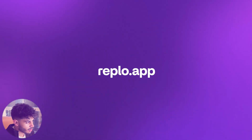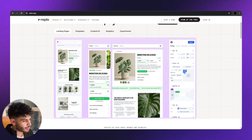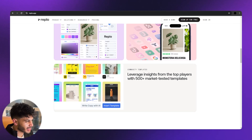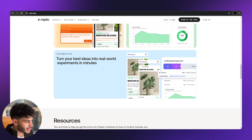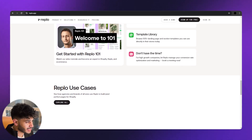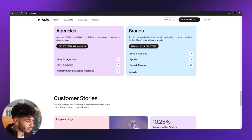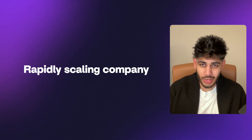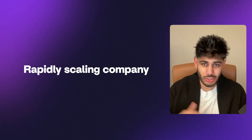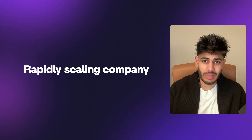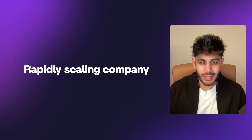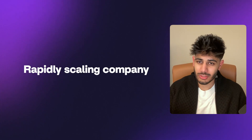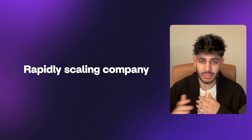Now let's get into the project. Replo is the single most robust, conversion-focused platform for Shopify teams to set up, measure, and test winning campaigns and landing pages. It's used by thousands of agencies and brands every day that are rapidly scaling and want the most powerful landing page product to support their growth. The team was rapidly scaling as well, launching new features and reaching new heights, and their older website was just not serving their growing needs.